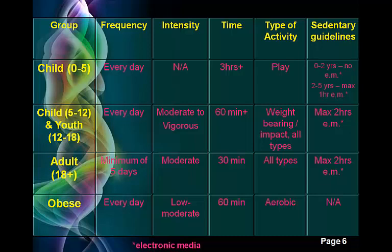Also included are sedentary guidelines. EM stands for electronic media — children two years and under should not be using electronic media at all. Electronic media includes TV, DVDs, video games, iPads, tablets, iPods, and phones. Children and youth should have a maximum of two hours, and adults also a maximum of two hours. This does not include educational use — for example, if a child needs to research on the internet for homework, that's not counted in the two hours because it's a requirement, not a leisurely activity.